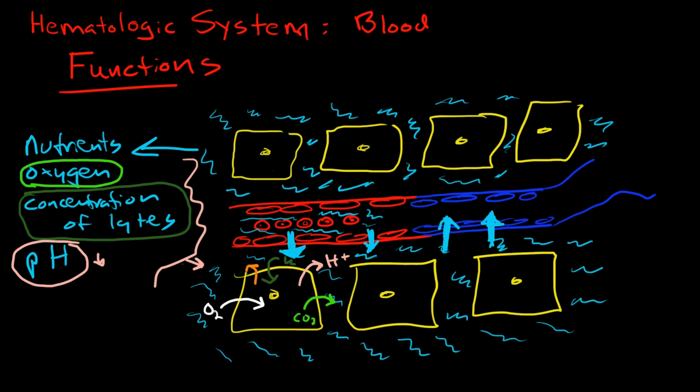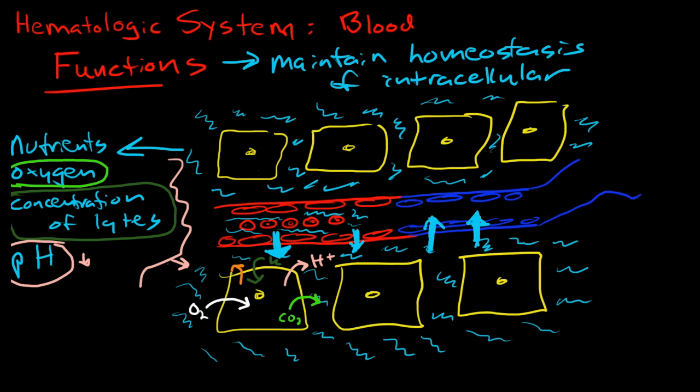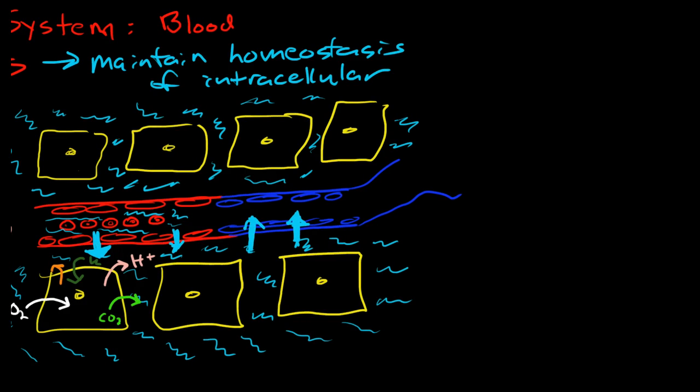The fluid comes out on the arterial end and goes back in on the venous end. The main function of the hematologic system is to maintain the homeostasis of the intracellular fluid. This seems obvious, but it's a concept you really need to understand intuitively.